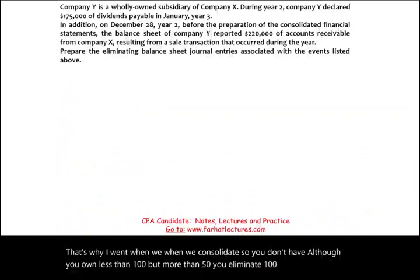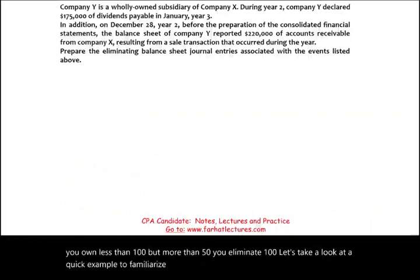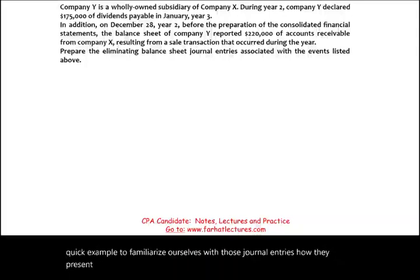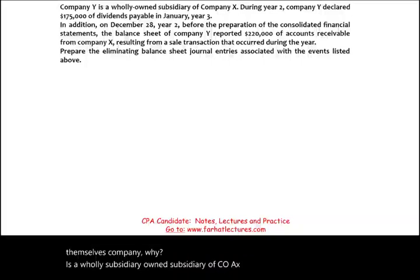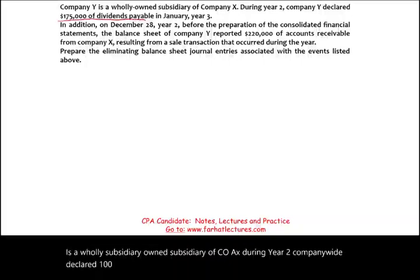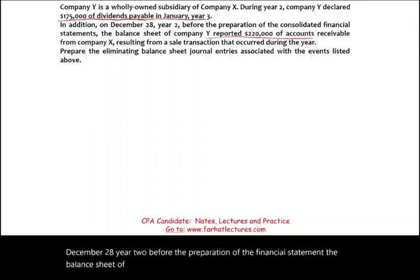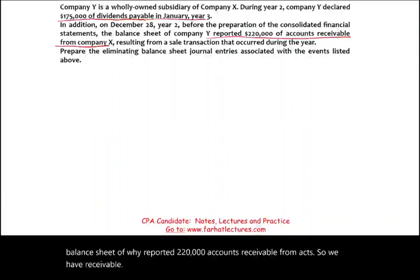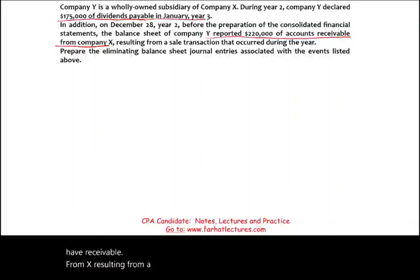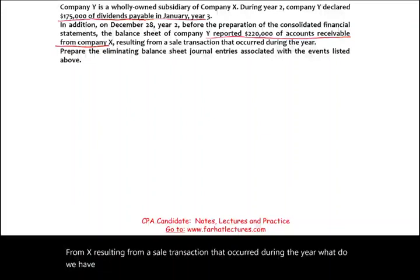Let's take a look at a quick example to familiarize ourselves with those journal entries. Company Y is a wholly owned subsidiary of Company X. During year two, Company Y declared $175,000 of dividends payable on January 3rd, year three. In addition, on December 28th year two, before preparation of financial statements, the balance sheet of Y reported $220,000 accounts receivable from X, resulting from a sale transaction during the year. So we have intercompany dividends and intercompany receivables — both need to be eliminated.